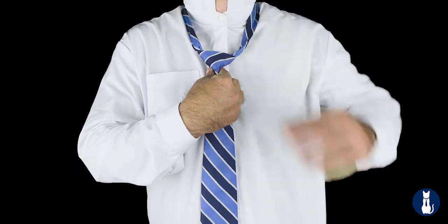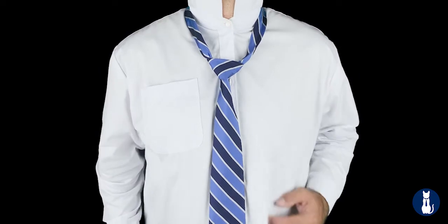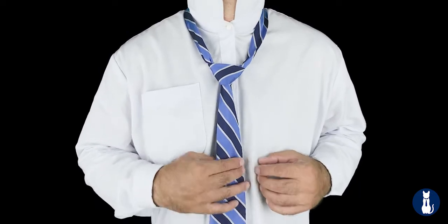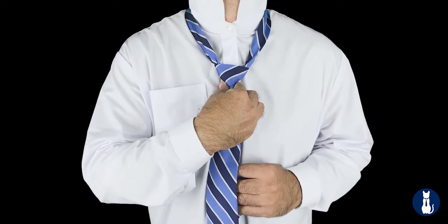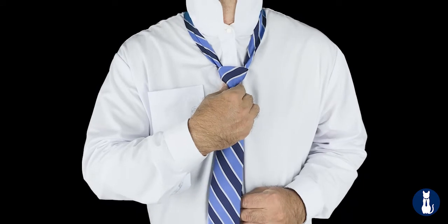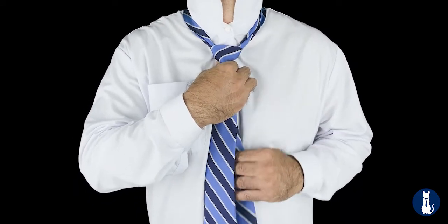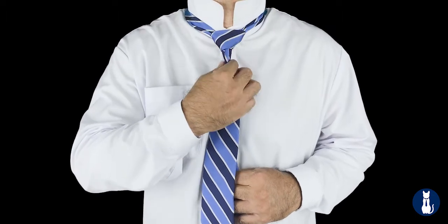To tighten the tie around your neck, grab the skinny end with one hand and the bottom of the knot with the other hand. Now you do a pull and slide motion. Pull in the skinny end, slide the knot up. Pull, slide, until you close the tie hole. Tidy up a bit.